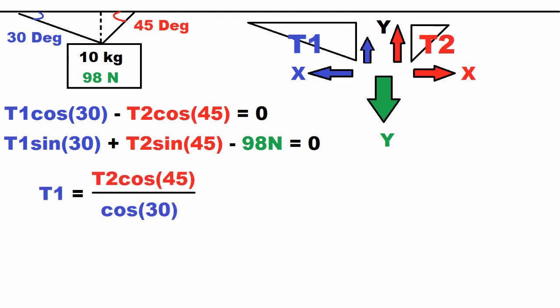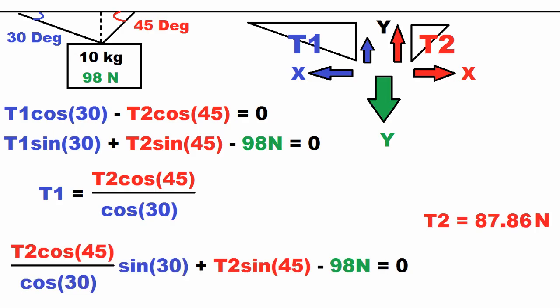Now I took the first equation with the cosines and made T1 on one side and everything else on the other side by doing basic algebra. We take what we just found T1 to be equal to and plug that into the second equation, then we solve for T2. T2 equals 87.86 newtons.